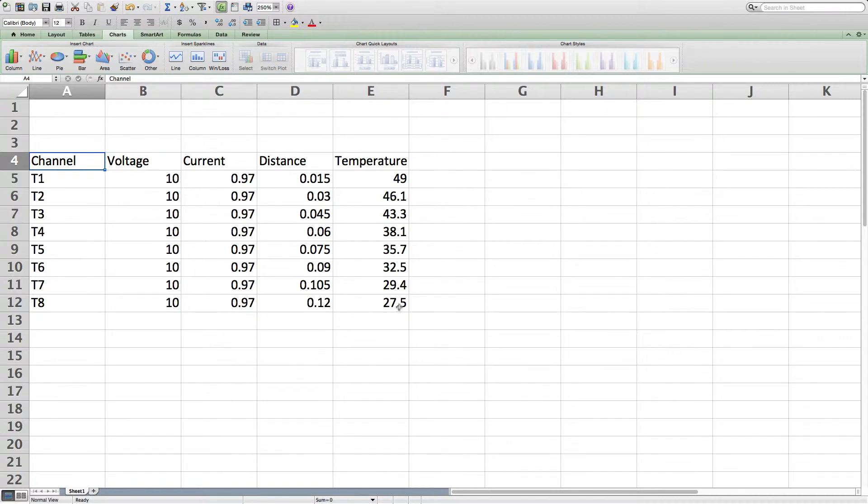Now these two do change, these two aren't constant. So we're going to be recording the temperature at different distances away. So first we have 0.015 and the temperature and then 0.03 and the temperature. So we'll be recording the temperature at each interval of 0.015 meters.